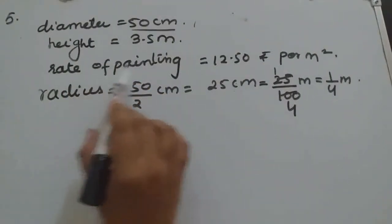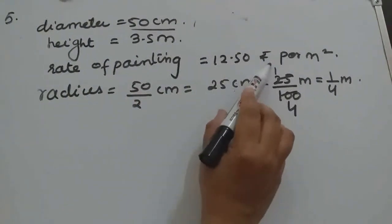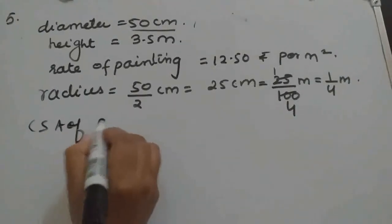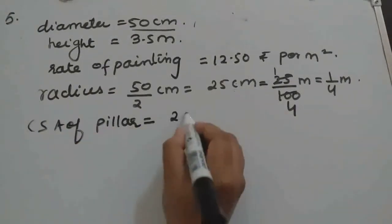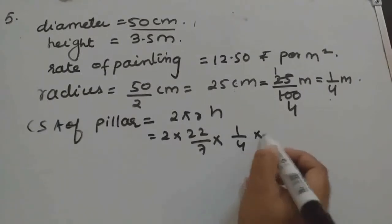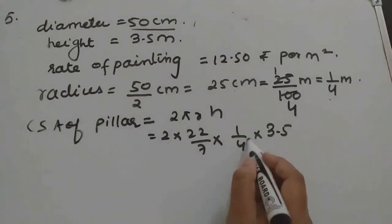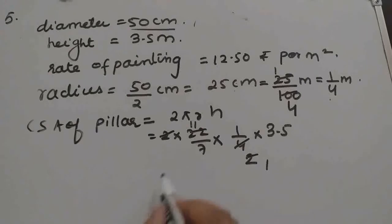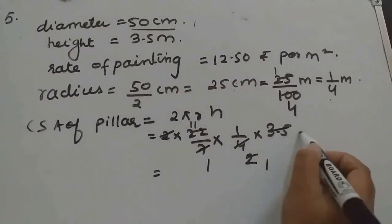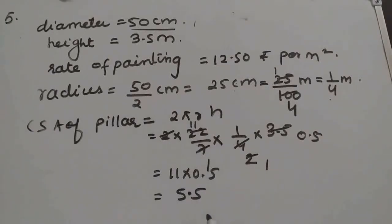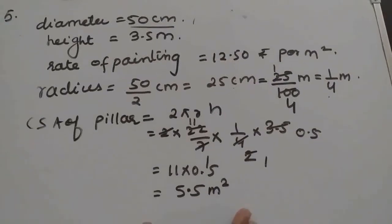Height is given as 3.5 meter. Rate of painting is given. We need to find the cost of painting the curved surface of the pillar. So first we find CSA of pillar: 2πRH = 2 into 22/7 into 1/4 into 3.5. The 2 and the 2 cancel. Then 7 ones cancel with 7. And 7 fives are 35, so 11 into 0.5. Since 11 fives are 55, with 1 decimal digit, this gives 5.5 meter square.